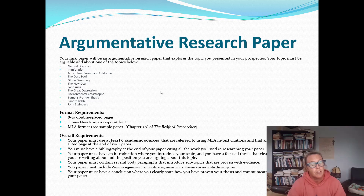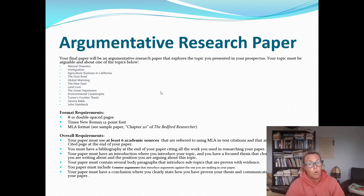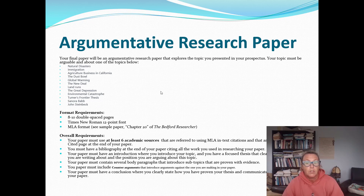You will lose points if you do not have completely correct MLA format at this point. If you have questions about MLA format, see chapter 20 in the Bedford Researcher or come visit me during office hours. The overall requirement is that you have at least six academic sources — you can have more, but six must be academic — and they need to be referenced using MLA in-text citations that are listed on a works cited page at the end of your paper.